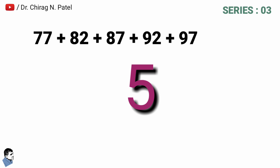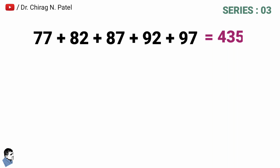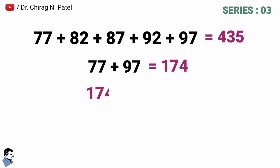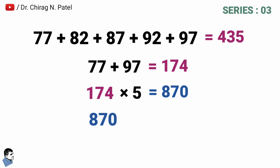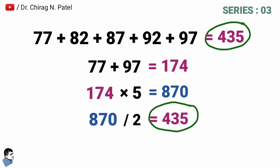Now take another series: 77 + 82 + 87 + 92 + 97, with a common difference of 5. The calculated answer is 435. Using the math trick: first, 77 + 97 = 174. Then multiply by the count: 174 × 5 = 870. Finally, 870 ÷ 2 = 435 — which matches the calculated answer.